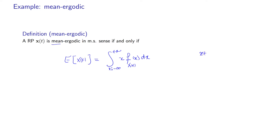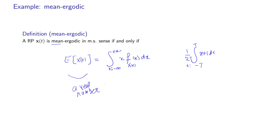We define the temporal average as the integral of X of T from minus T to T, divided by 2T. This quantity is a real number, whereas the statistical mean is a random variable because the integral is a summation of random entities. We say the process is mean ergodic if this averaging over time converges to the statistical mean.